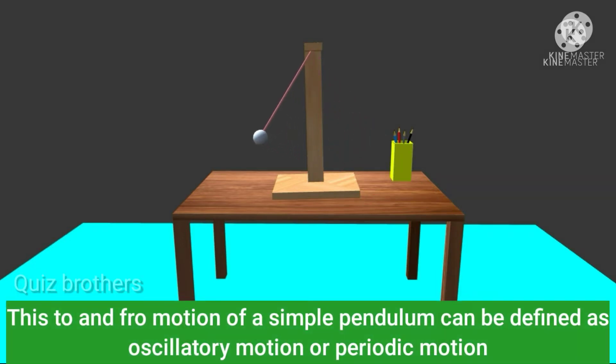This to and fro motion of a simple pendulum can be defined as oscillatory motion or periodic motion.